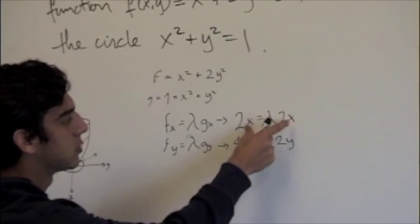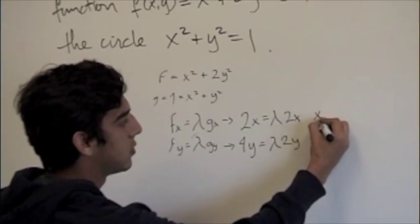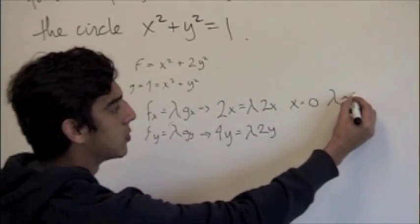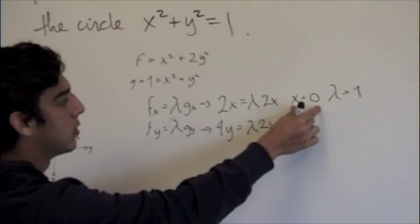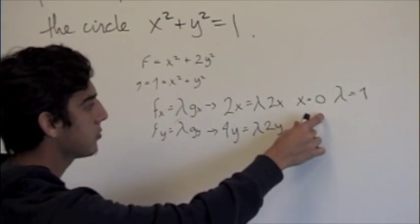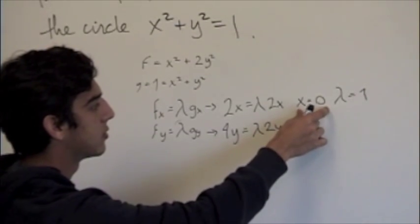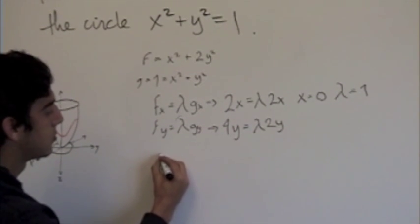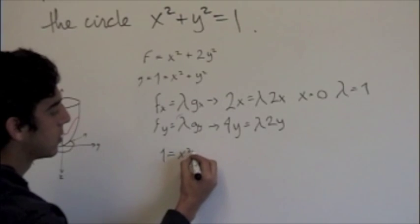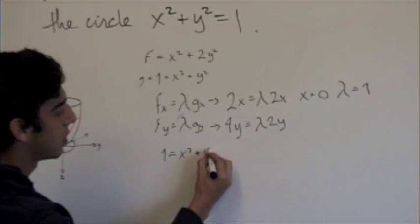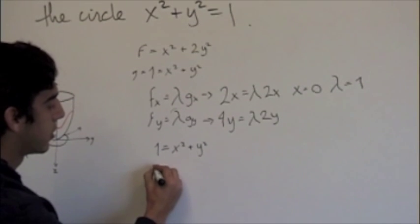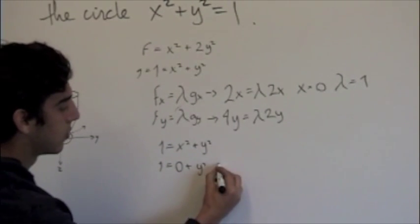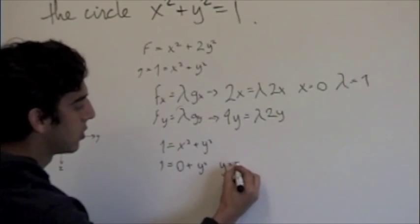For this we have two solutions: either x = 0 or lambda = 1. We know that x could equal 0, so now we use our other equation g(x,y). If 1 = x² + y², we plug this 0 into the equation and get 1 = 0 + y², which gives us y = ±1.